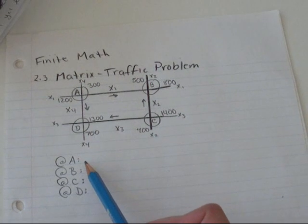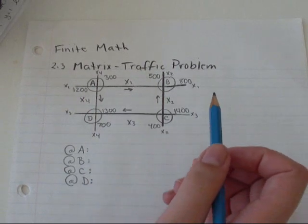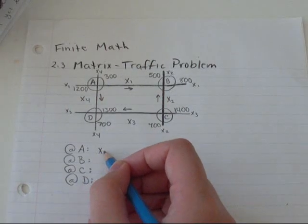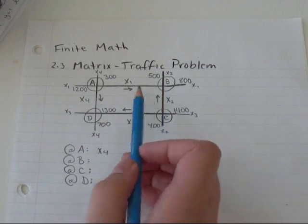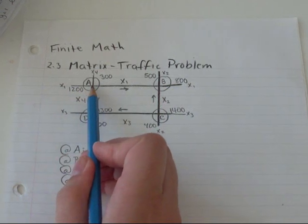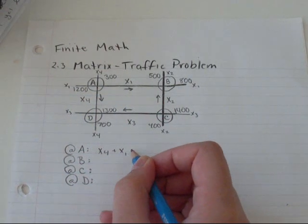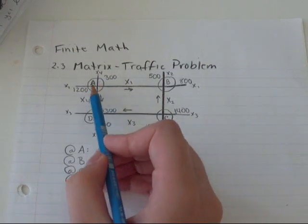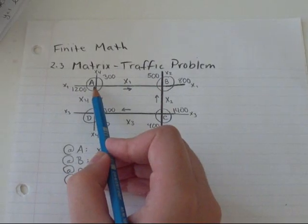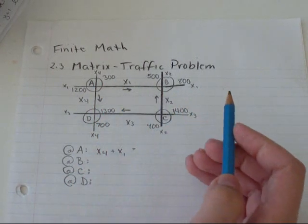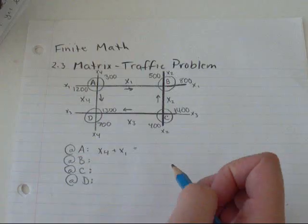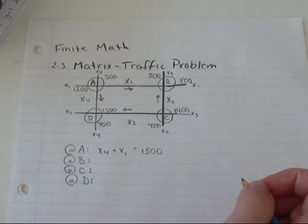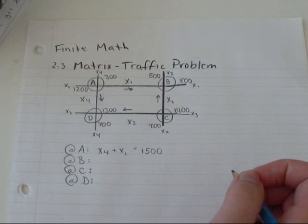at intersection A I'm getting cars that are coming down X4 and cars that are going across X1. And that equals, there's 300 cars coming down X4 and 1200 going across X1. So X4 plus X1 is 300 plus 1200, so that's going to be 1500 cars in that intersection at any given time.